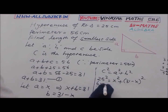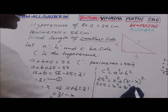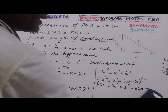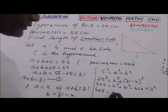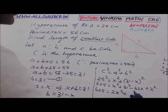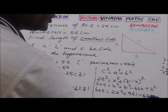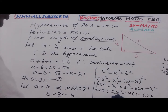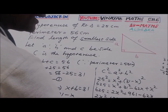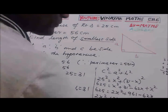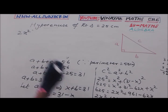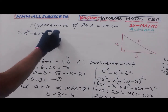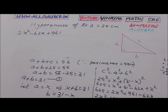Expanding: 625 equals X squared plus 961 minus 62X plus X squared, which simplifies to 625 equals 2X squared minus 62X plus 961.